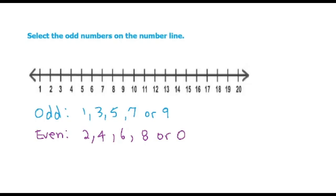So if we come to the number line, let's identify the even numbers first. So 2, 4, 6, 8, 10, 12, 14, 16, 18, 20. Those are all the even numbers.